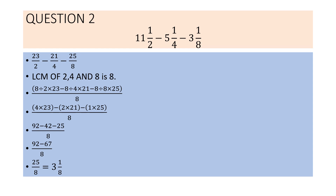Continuing: 92 minus 42 minus 25 by 8. Solving further gives 92 minus 67 by 8, which equals 25 by 8. Changing it into a mixed fraction gives 3 and 1 by 8 as the answer.